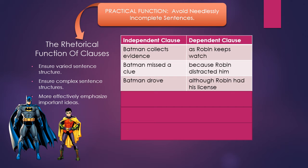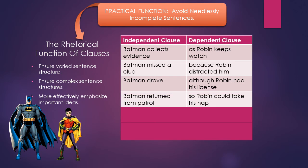Fourth: 'Batman returned from patrol' is a complete, independent clause — subject Batman, verb returned. The dependent clause is 'so Robin could take his nap.' The word 'so' sets it up in a way that requires an additional piece of information before we have a complete sentence.